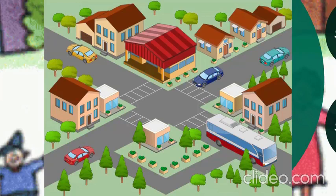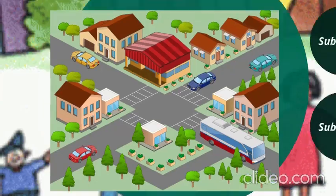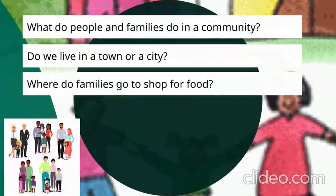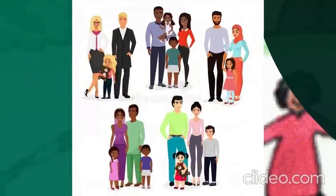What do we do in our neighborhood? We live there, we work there, and we play there if there is a garden nearby. So what do people and families do in a community? Let's look at these families — what do they do in a community? Each of these families has a mother, a father, and their kids.